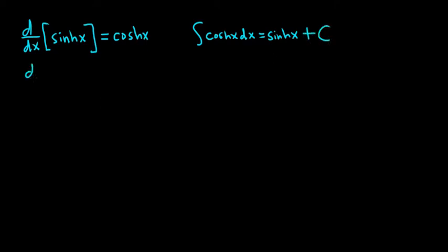If we take the derivative of cosh, or the hyperbolic cosine, we just get the hyperbolic sine — sinh. This is different from regular trig functions. Like if you take the derivative of cosine, you would get negative sine. But this is much easier — there's no negative, so you just get sinh.